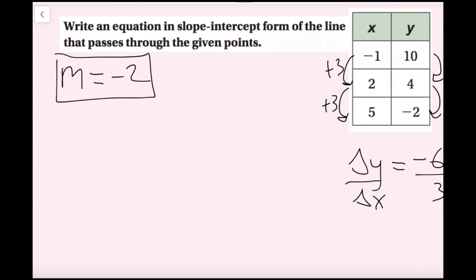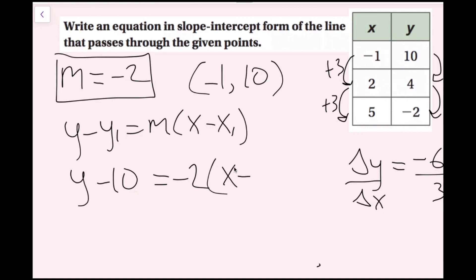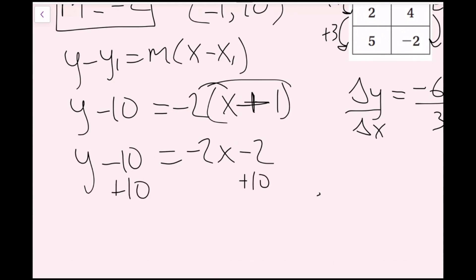So m equals negative 2. Using point-slope form, I can pick any point on the line — I'll pick negative 1 comma 10. The formula is y minus y1 equals m times x minus x1, so I have y minus 10 equals negative 2 times quantity x minus negative 1. The negatives turn into a plus. To get slope-intercept form, I distribute the negative 2: y minus 10 equals negative 2x minus 2. Adding 10 on both sides gives y equals negative 2x plus 8.